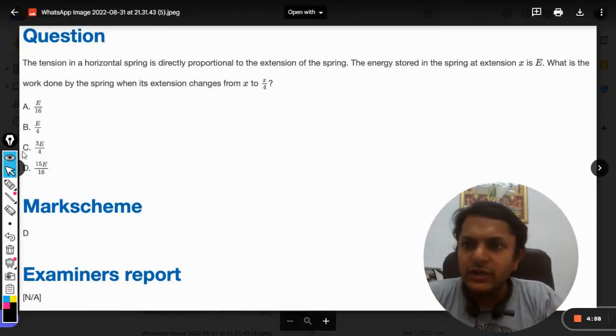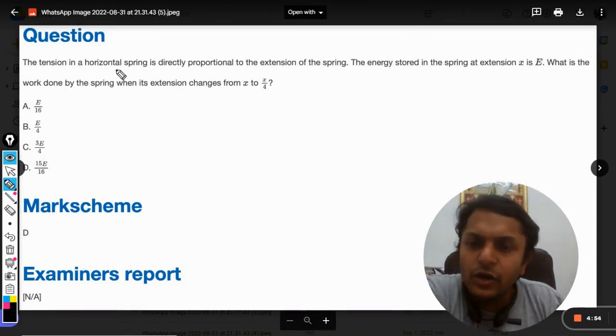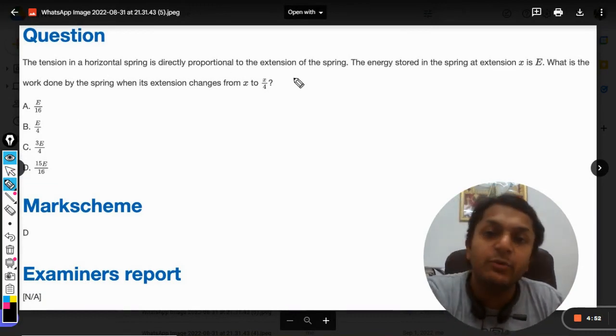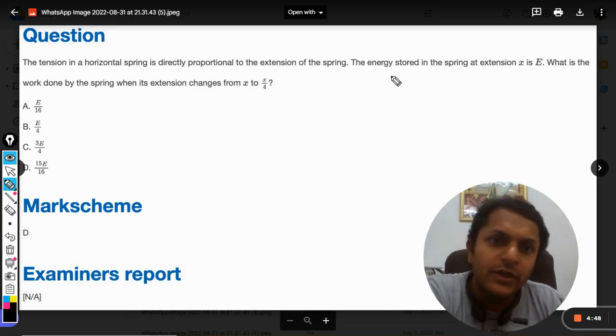Okay dear students, let's see what is there in this question. The tension in a horizontal spring is directly proportional to the extension of the spring. That's already known. Energy stored in the spring at the extension x is given as E.